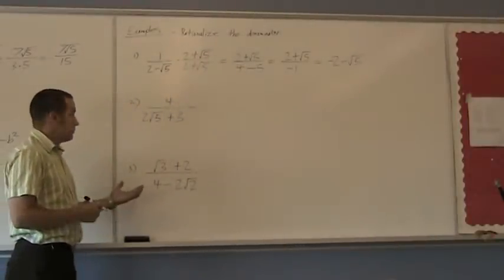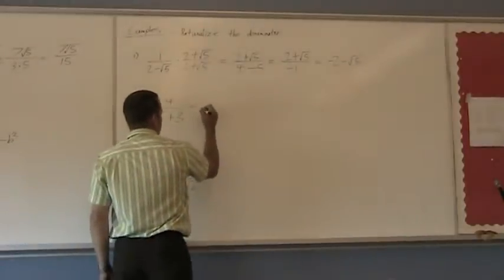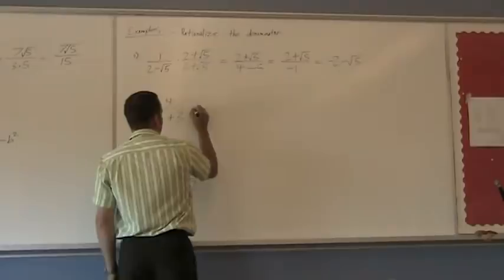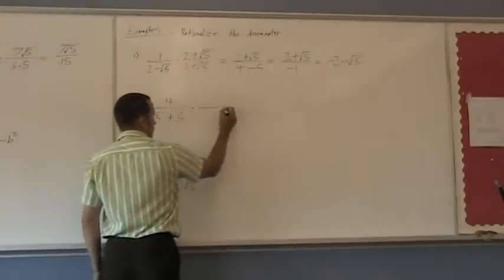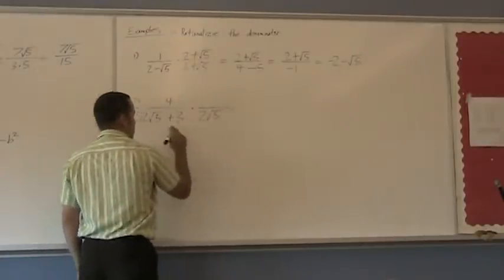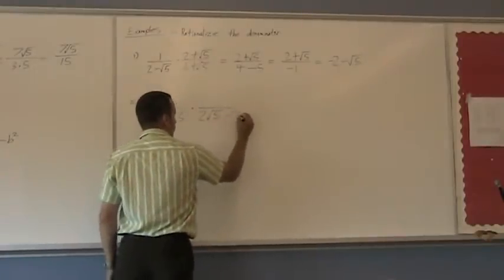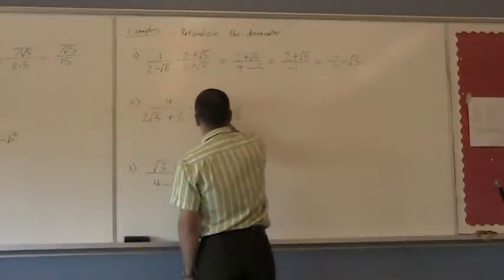Next, same principle, same exact thing as what we were doing before. Multiply both top and bottom by the conjugate of the bottom. So the conjugate here would be 2 square root of 5 subtract 3. Opposite sign in the middle. So I'm doing the same thing on the top.